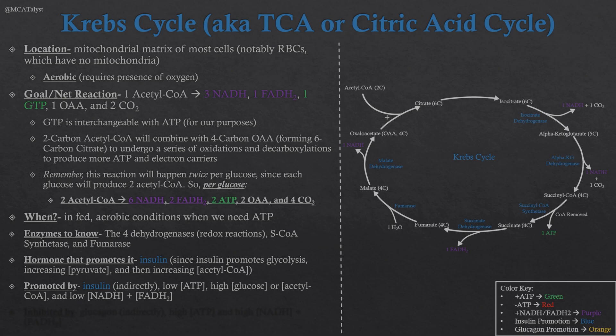The specific conditions promoting the Krebs cycle: insulin has a way of directly promoting it through that chain reaction through glycolysis and the PDC. If we do not have a lot of ATP, we'll turn on the Krebs cycle to produce more ATP and electron carriers. Having high glucose or acetyl-CoA will also push us through the Krebs cycle. Having a low amount of electron carriers will also cause us to turn on the Krebs cycle — we produce eight electron carriers per glucose in the Krebs cycle, compared to only two in glycolysis and two in the PDC.